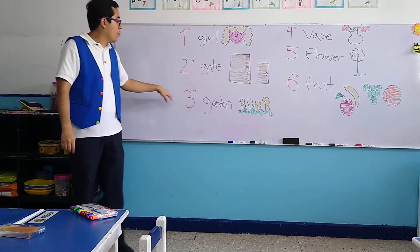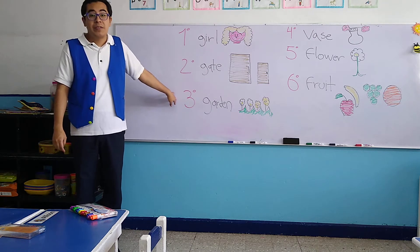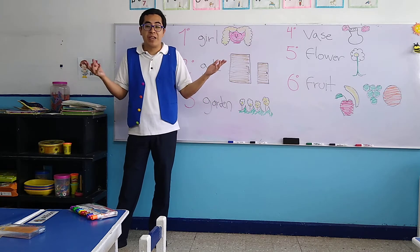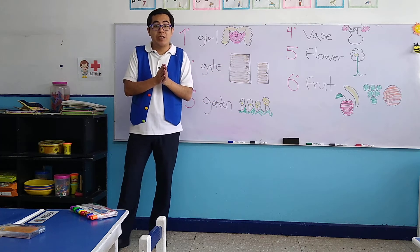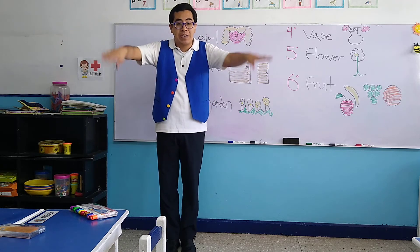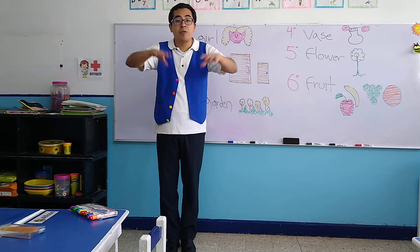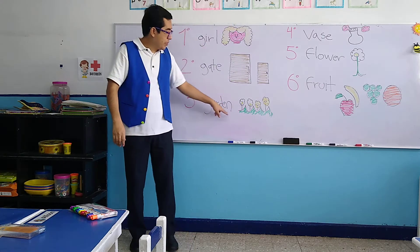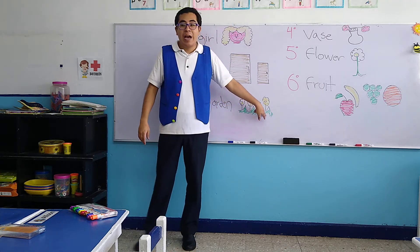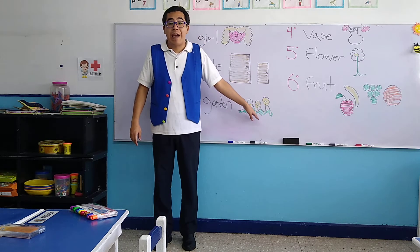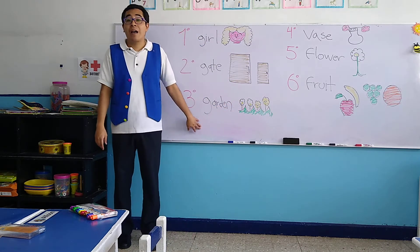Let's continue with the third word. The third word says 'garden.' What is a garden? Garden is the place that is covered with grass — pasto. It's all covered with grass and has a lot of flowers. These are flowers, and under the flowers we have the grass. That is a garden.